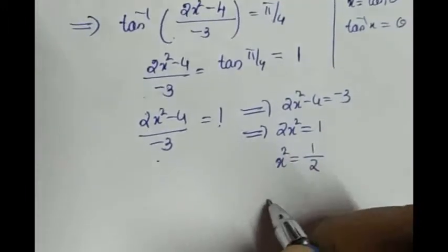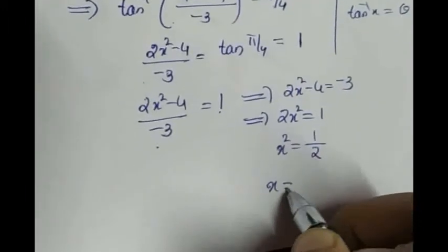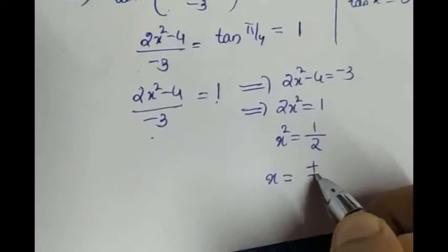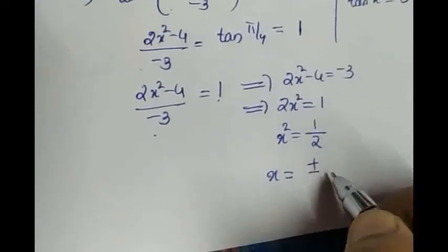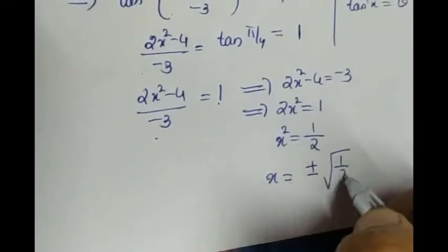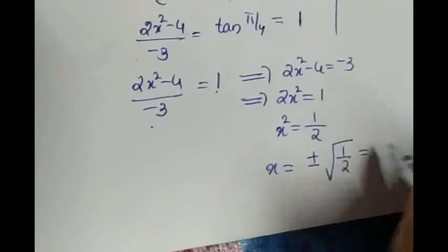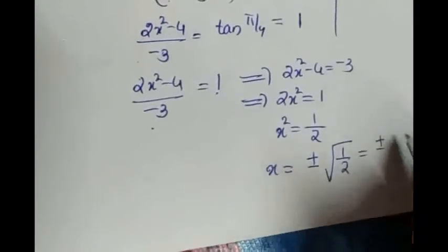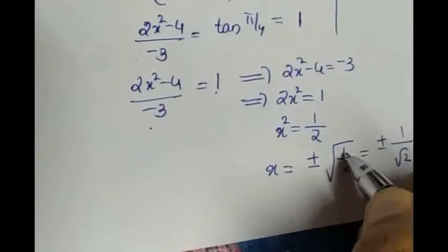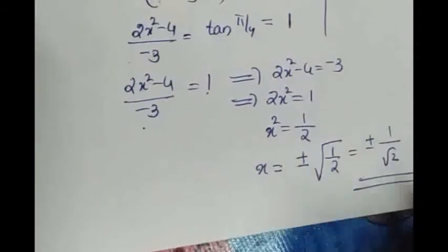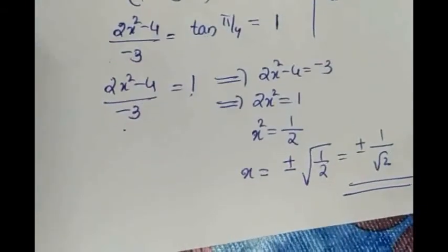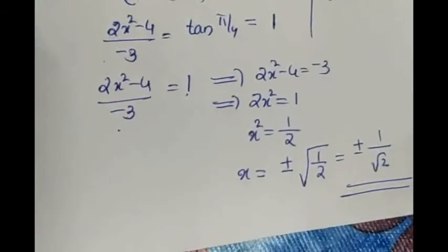Taking the square root, and remembering to include both signs, the value of x is plus or minus root of (1 by 2), which can also be written as plus or minus 1 by root 2, since the root of 1 is 1. So the final answer is x equals plus or minus 1 by root 2.